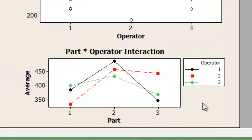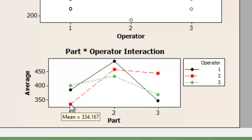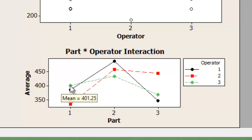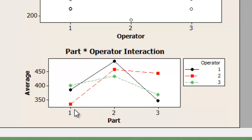Let's look at the graphs on the right side. Operator 1 is marked in black, Operator 2 in red, and Operator 3 in green. I have three distinct parts — part number 1, part number 2, and part number 3. Part number 1 measured by Operator 2 is less than 350 — around 334. Measured by Operator 1 it is 385, and by Operator 3 it is 401. Huge variation. The means of the three operators are very, very far away from each other. Had there been little or no measurement error, the three means would have been juxtaposed or at least very, very close.